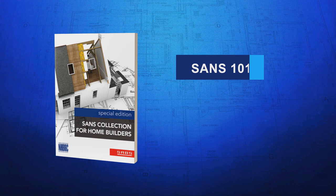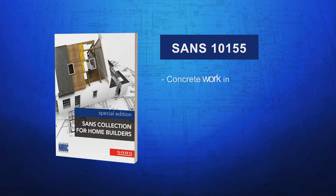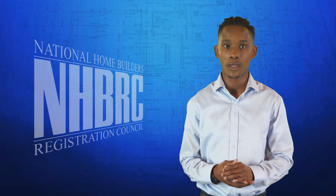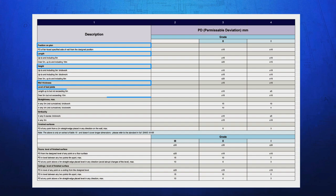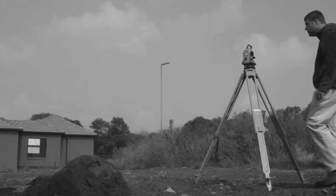SANS 10155 Accuracy in Buildings outlines the method of measurement and the accuracy of dimensions required for the setting out and completion of building work for concrete work in foundations, concrete work above ground, masonry reinforcement in masonry, drainage, trusses, and finished floors. There are some tolerances allowed — the amount you can deviate from the measurements indicated on the plan. These are outlined by the NHBRC, measured in millimeters. This table is an example of some of the tolerances, also known as deviations, from the position on the plan to length, height, levels, and so on.